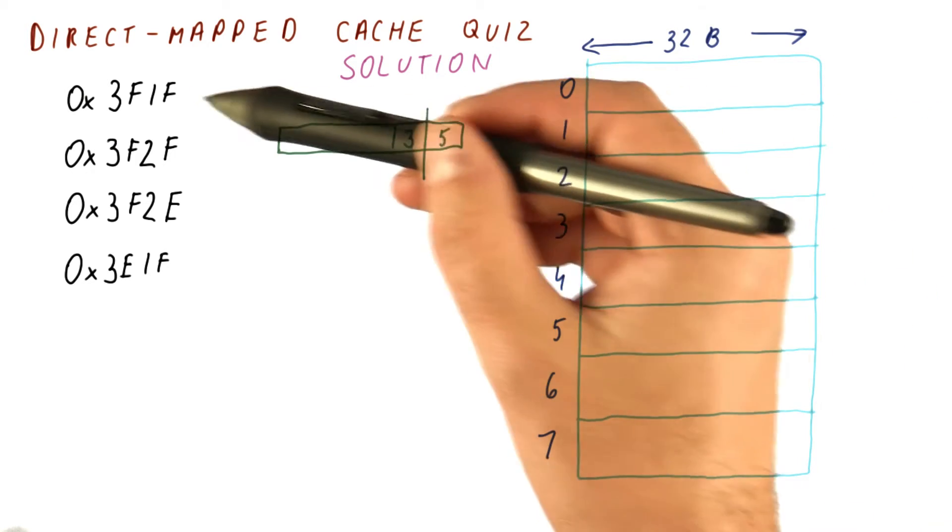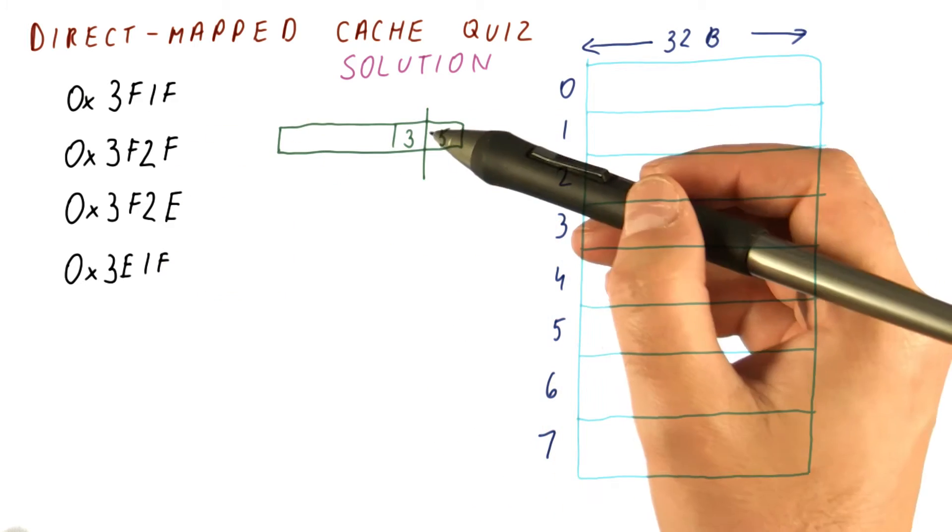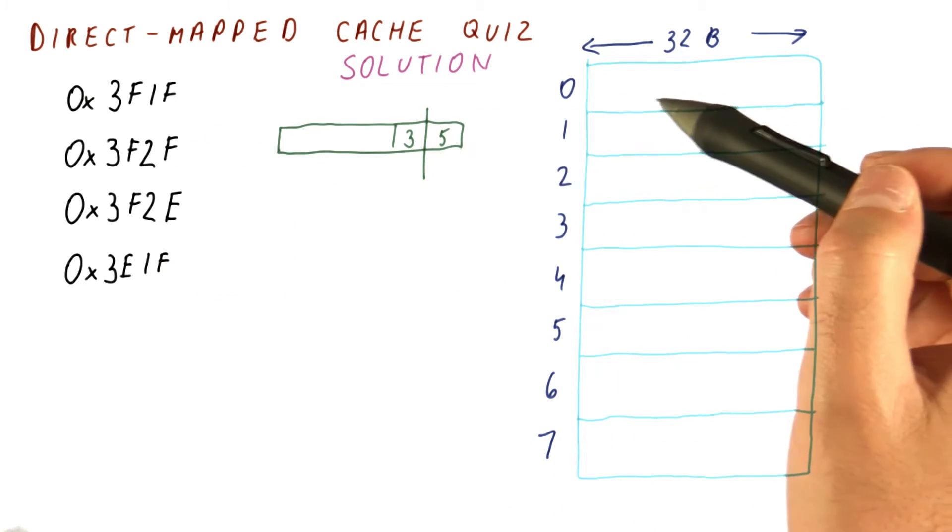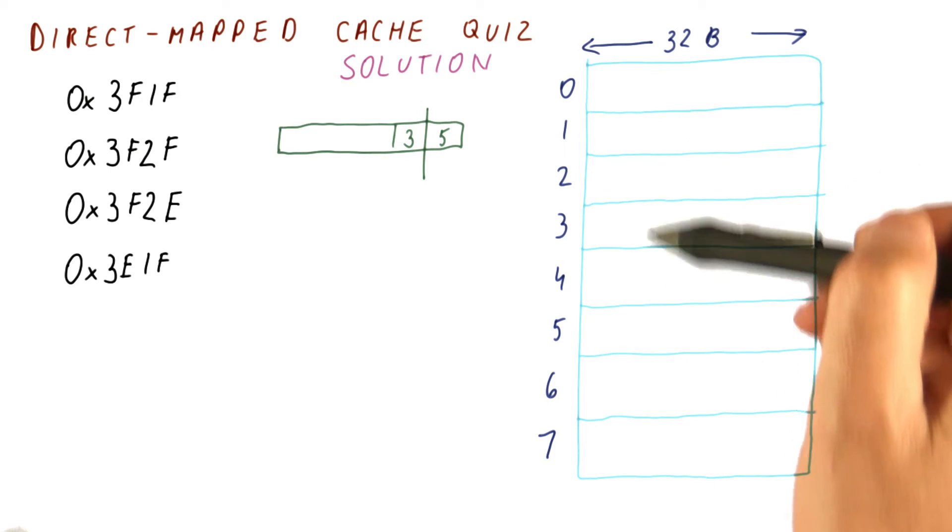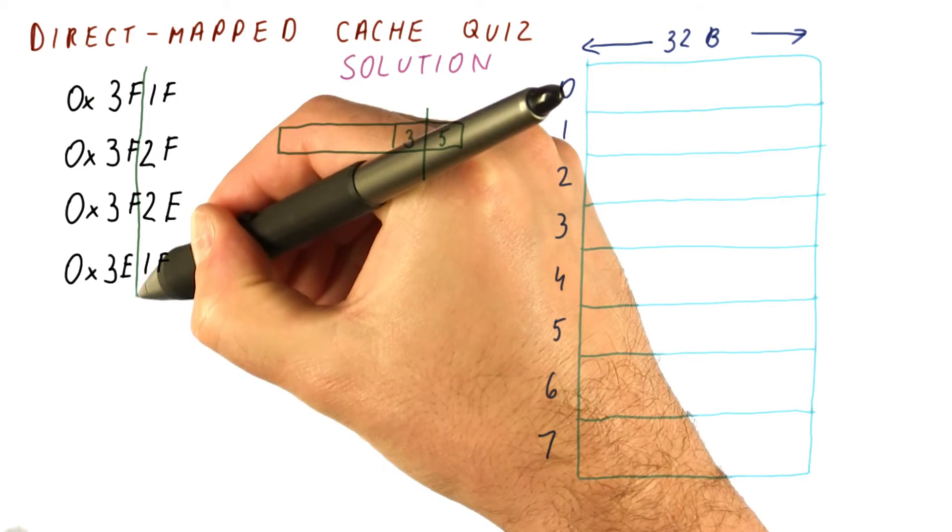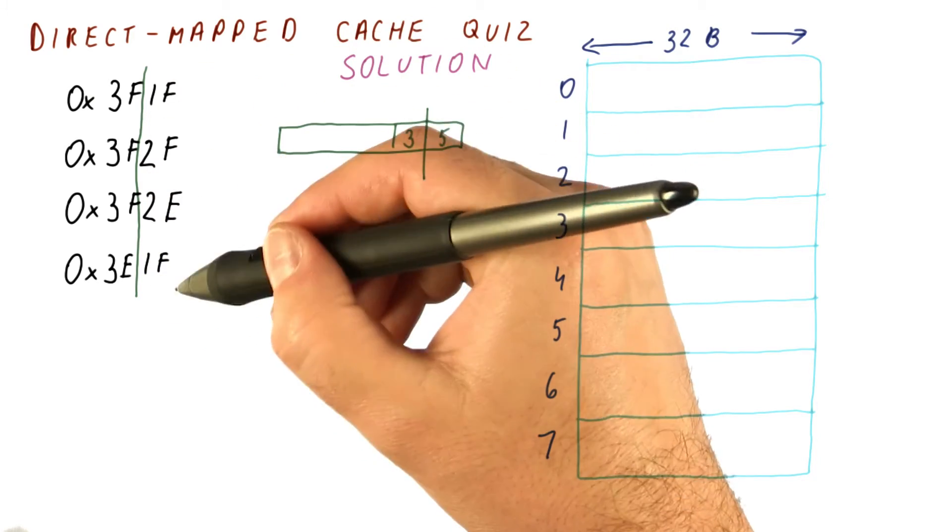Now let's consider which of these map where in the cache. As you can see, the least significant eight bits are going to determine where in the cache something goes. So we can conveniently look at just the least significant two hex digits.